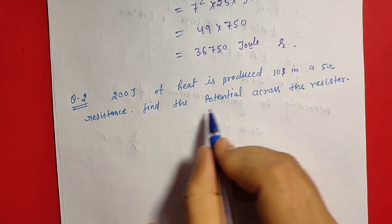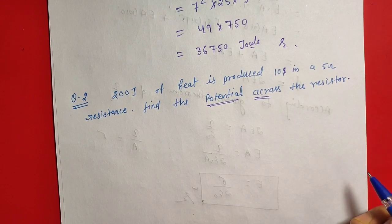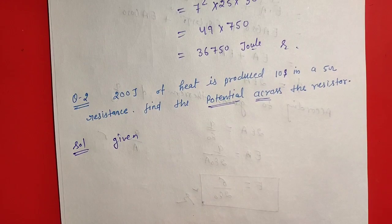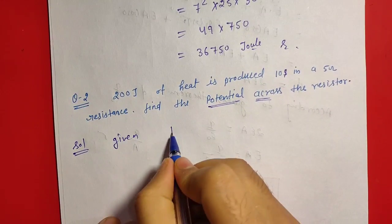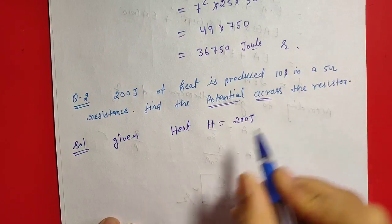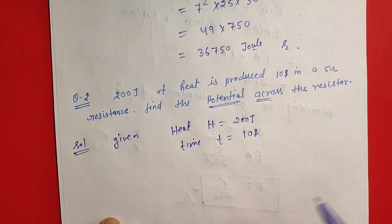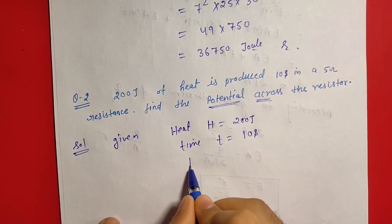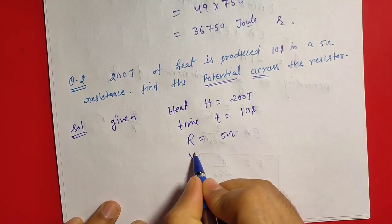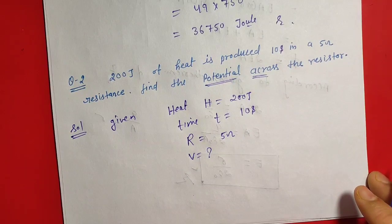In this question we have to calculate the potential difference across the resistor. Now given that heat H is equal to 200 Joule, time T is equal to 10 second and resistance R is equal to 5 ohm. We have to calculate the potential difference across the resistor.